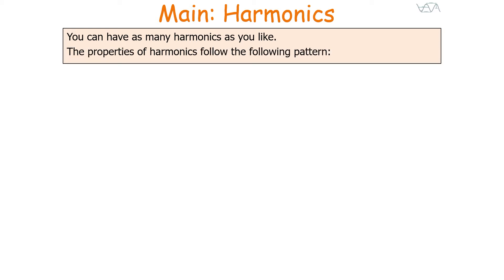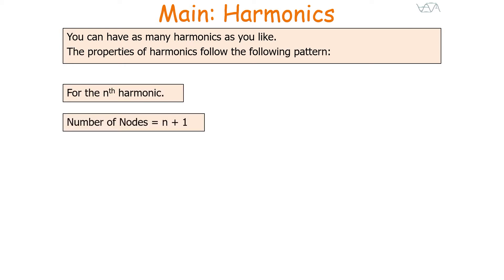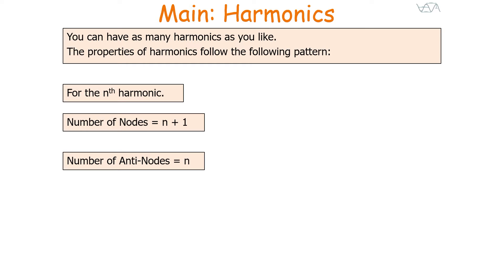The properties of harmonics follow this pattern. For the nth harmonic, the number of nodes on our standing wave is going to be n plus one, and the number of anti-nodes is going to equal n.